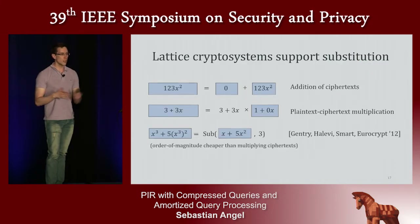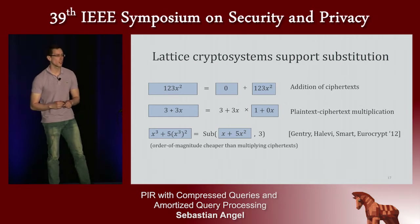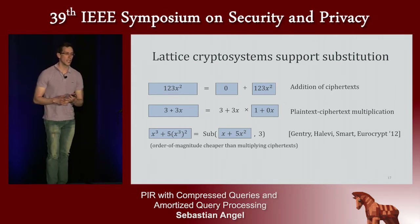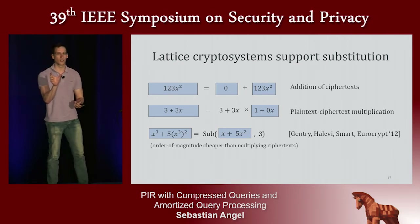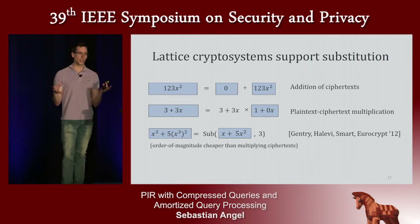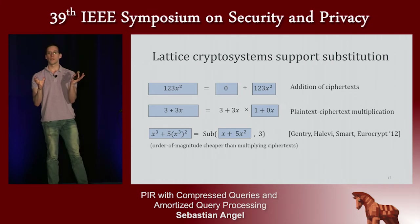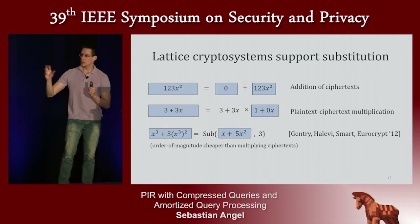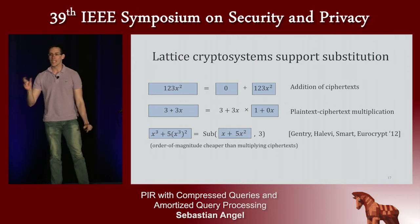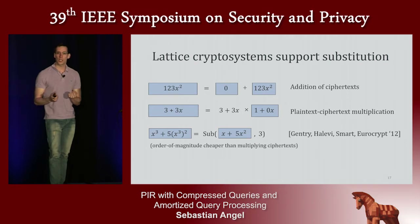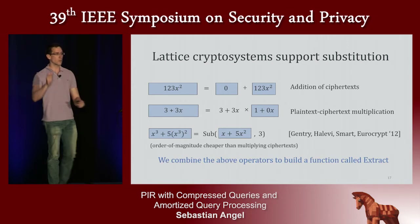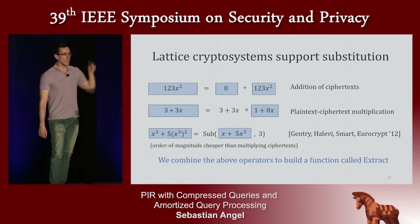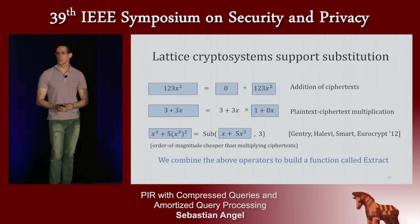We observe that this lattice-based cryptosystem supports an operation called substitution. This operation was used by Gentry, Halevi, and Smart to build arbitrary permutation networks, but we only need this building block. What substitution does is: given an encryption of a polynomial and an integer — say, 3 — it allows you to get back an encryption of the polynomial where every instance of x is substituted by x cubed. This operation is orders of magnitude more efficient than homomorphic multiplications.